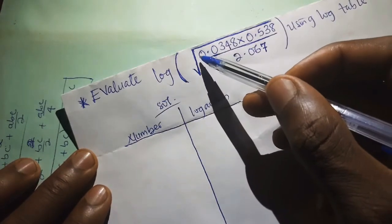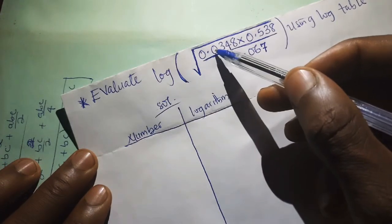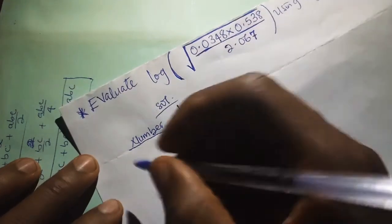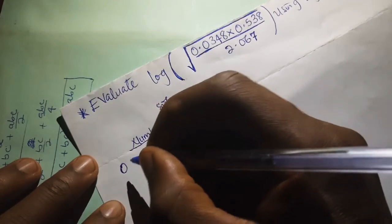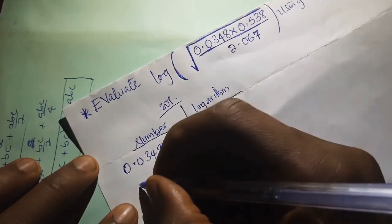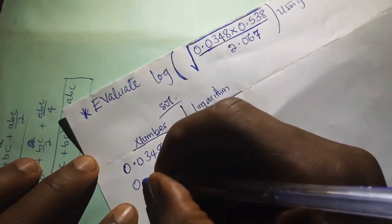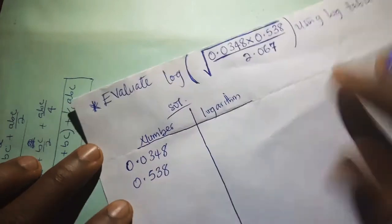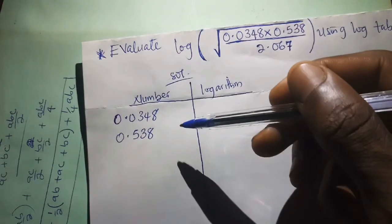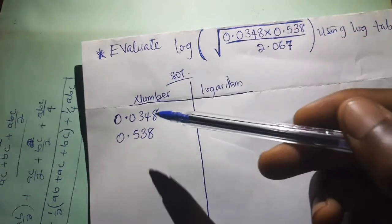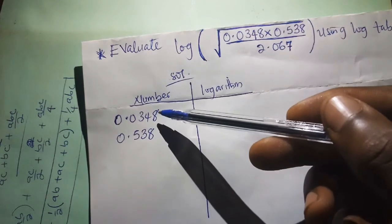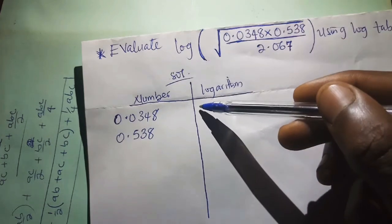Let's begin with the numerator: 0.0348 multiplied by 0.538. We write the numbers one after the other — the first one is 0.0348 and the second one is 0.538. The logarithm comprises two things: the characteristic and the mantissa. The characteristic is always obtained by converting the number to standard form, then writing the index of 10.